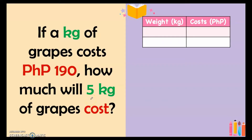Next example: if 1 kilogram of grapes costs 190 pesos, how much will 5 kilograms cost? Let's identify the proportion type. If you buy 1 kilo it costs 190; if you buy more, you pay more. Since an increase in quantity causes an increase in cost, this is an example of direct proportion.